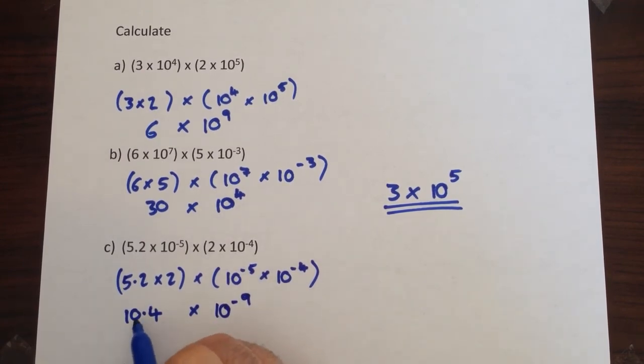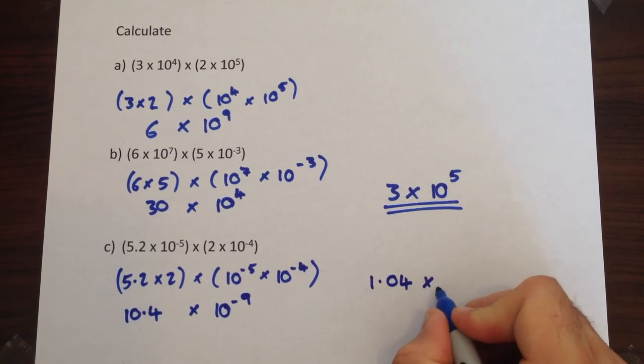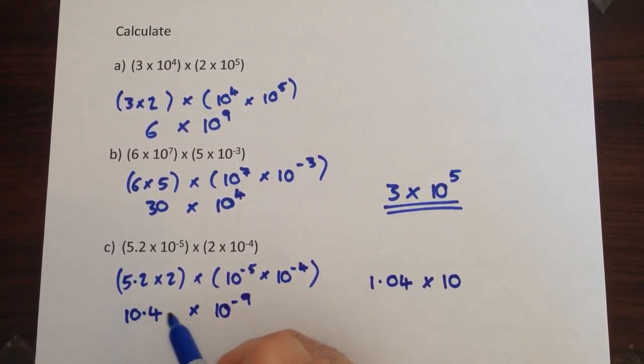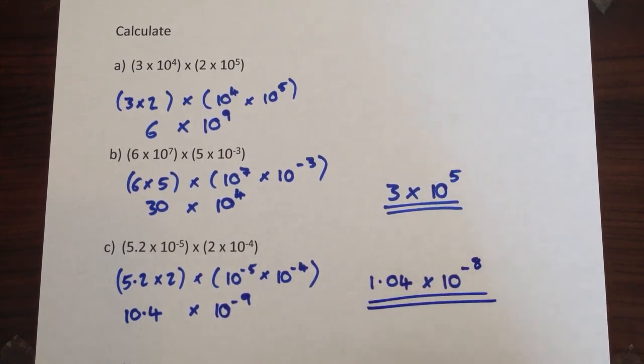Now this number can't stay like that. It's bigger than 10 so we need to make it smaller. We move the decimal point one place that way, so we've got 1.04 times 10. Now we just need to figure out the power. We've made this number smaller so we need to make this bigger. And this is the bit that confuses people: making a negative number bigger means you move it closer back to zero. So that's going to become negative 8.